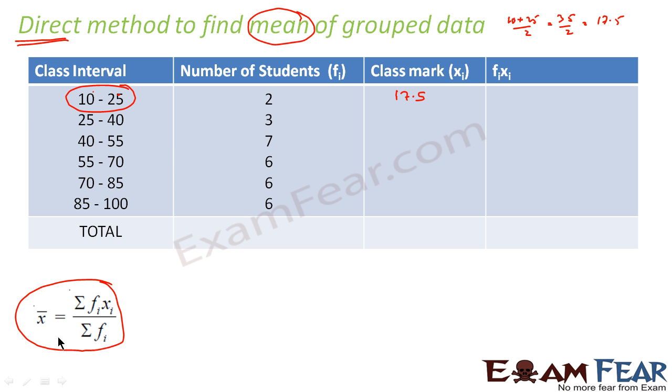In this case, the xi will be 25 plus 40, here is 65 by 2, that is 32.5. This becomes 32.5, correct. This is done.